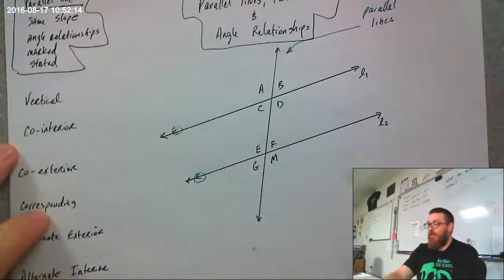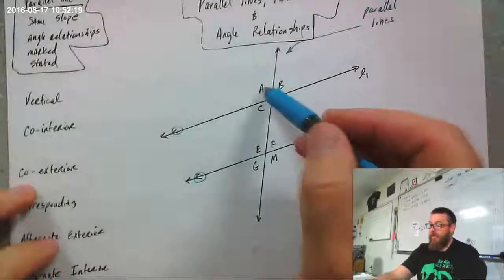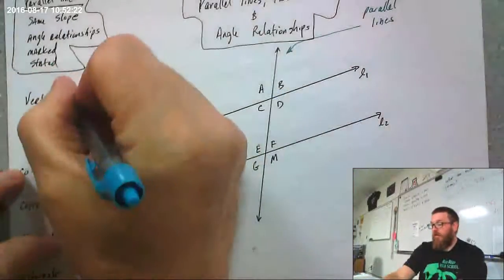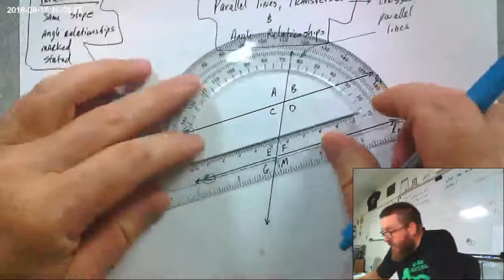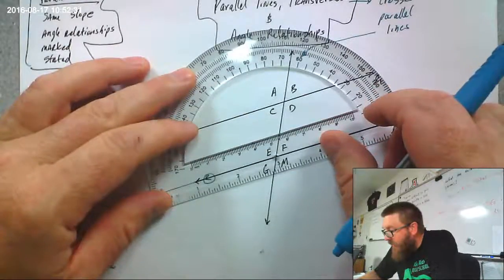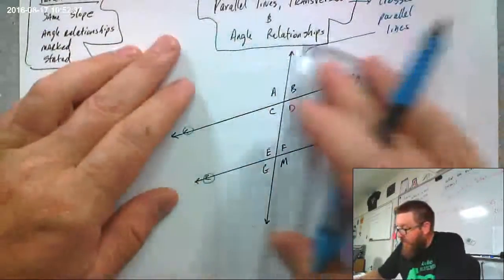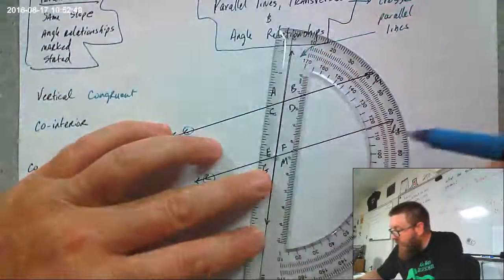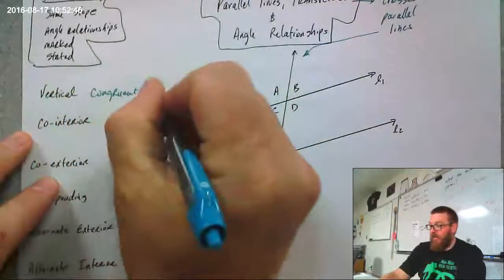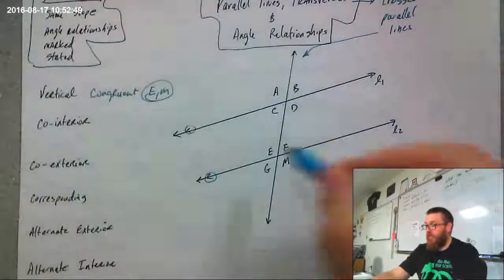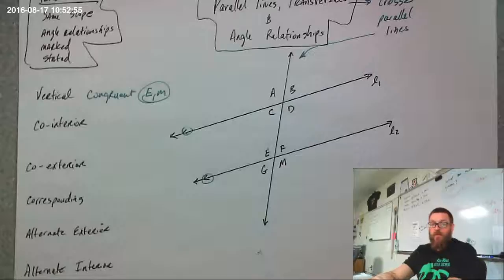Vertical angles are angles that share a pair of lines and a vertex, and they're opposite one another, like A and D. Vertical angles are always congruent. Angle E looks like 115 degrees, and if you measure angle M you get 115 degrees again. So angles E and M are vertical — so are F and G, and A and D, and C and B. Those are all pairs of vertical angles.